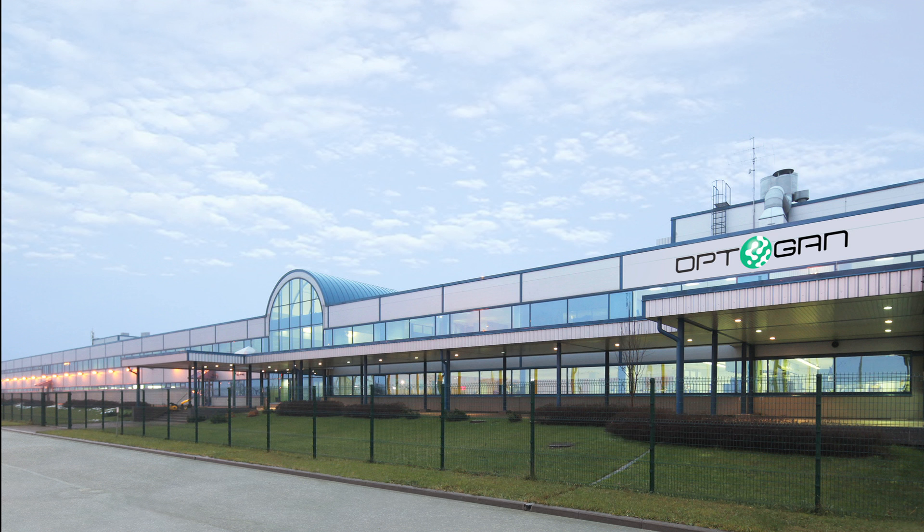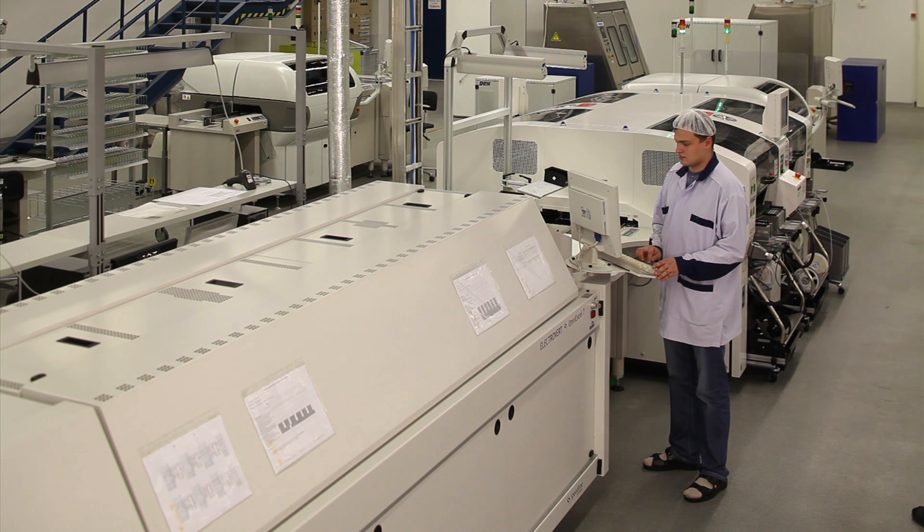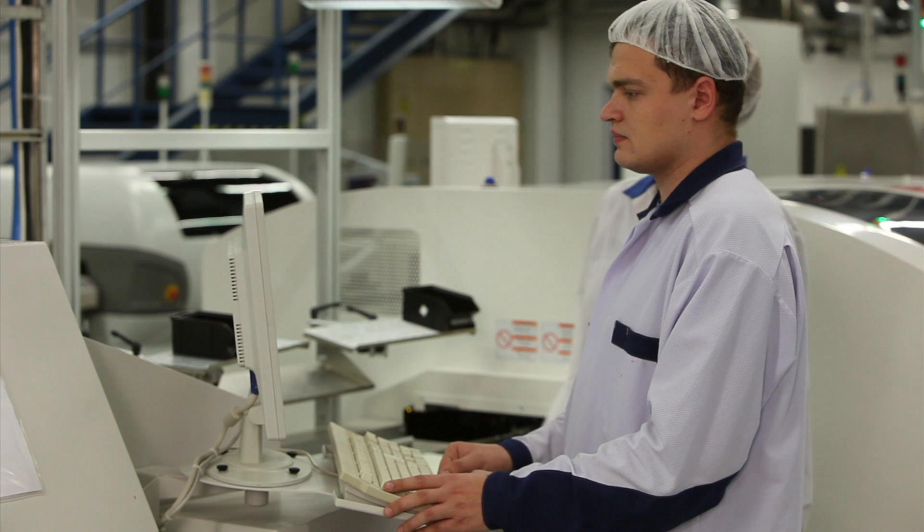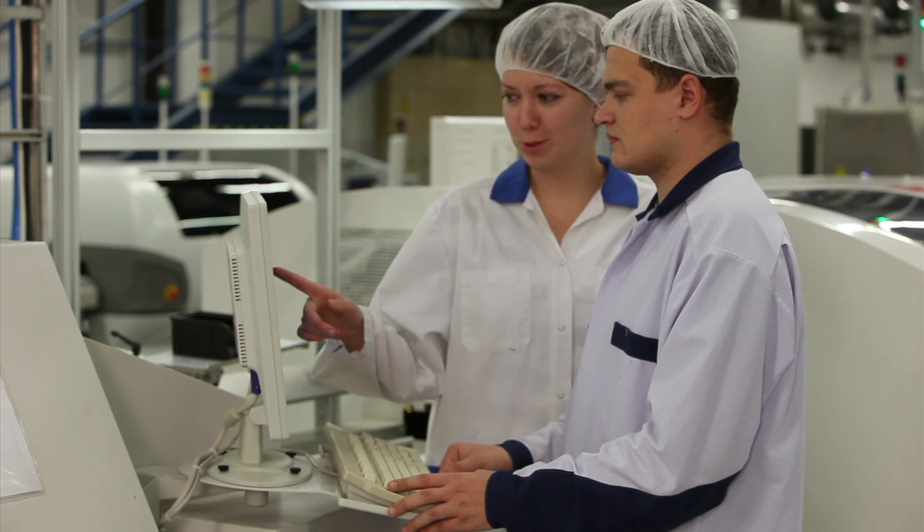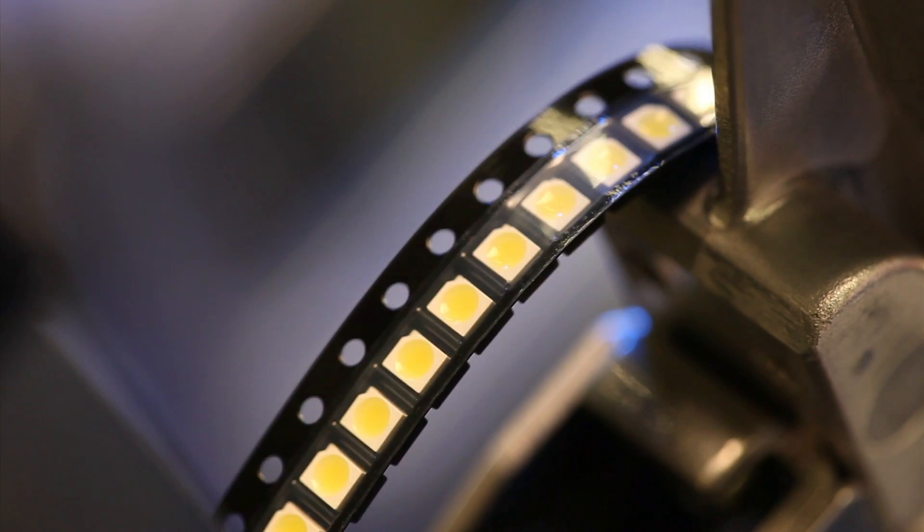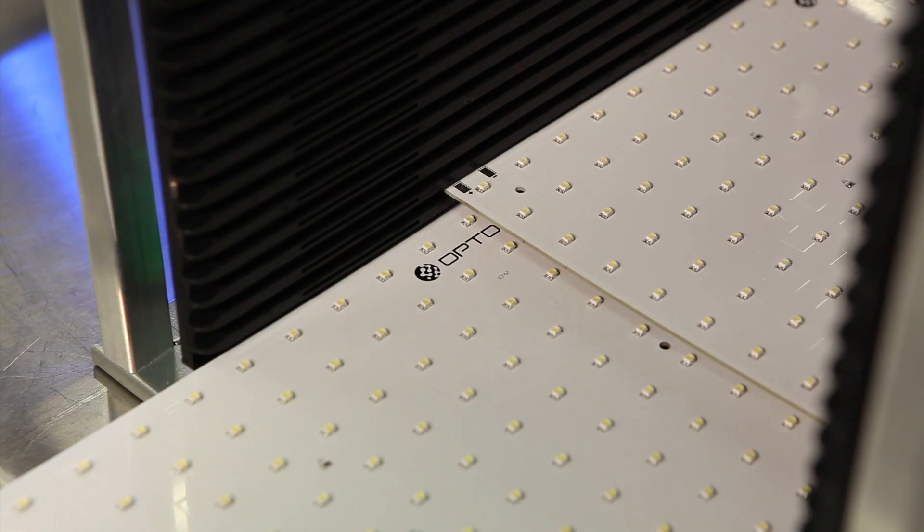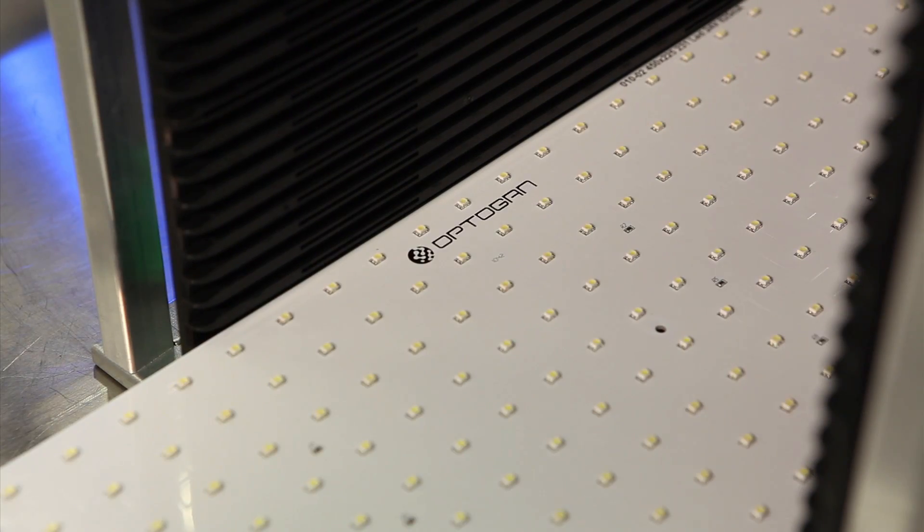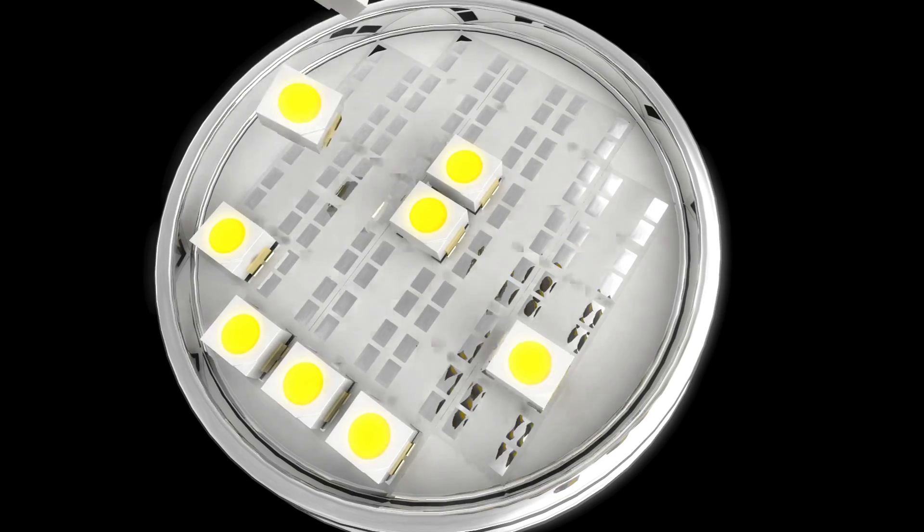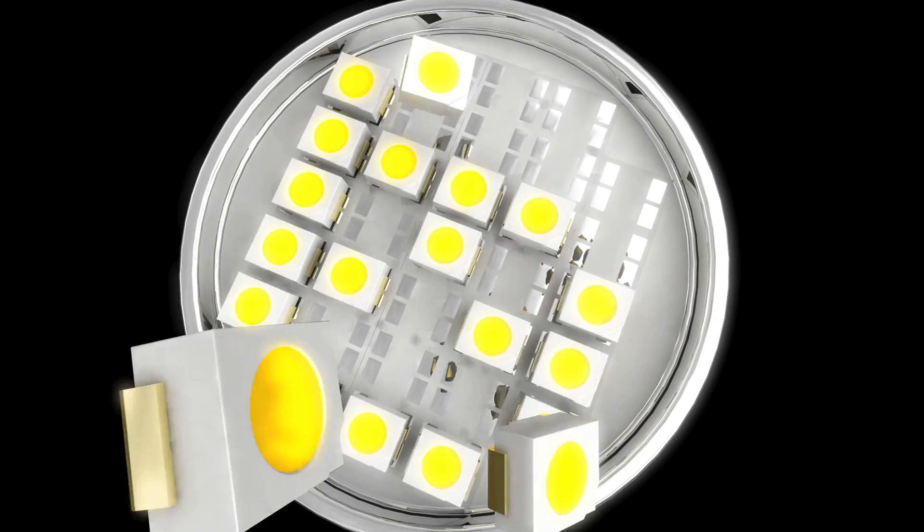Optagan's plant in St. Petersburg houses the lamp and luminaire assembly lines. According to the usage and intensity, up to 400 such LED modules can be found in office lighting. For lamps with household usage, around 30 diodes will be used.